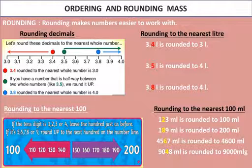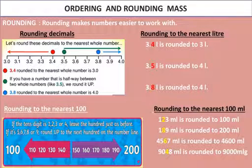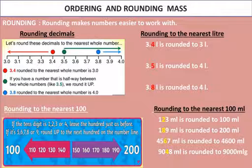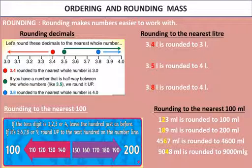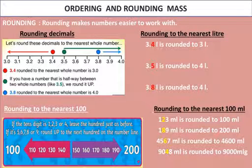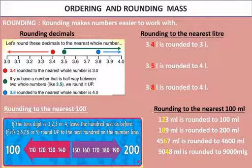For 9048: the hundreds place is 0, so we look at 48 — it falls between 0 and 100. The tens place is 4, which is less than 5, so we round down. 48 rounds to 0, meaning 9048 rounds to 9000 milliliter.